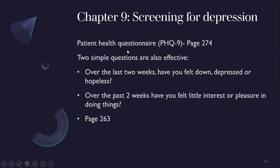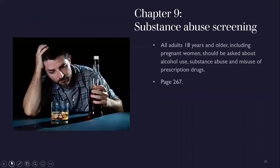Screening for depression: there's the 9-question PHQ-9, but two simple questions are also effective — 'Over the last two weeks, have you felt down, depressed, or hopeless?' or 'Have you had little interest or pleasure in doing things?' A 'yes' to either should prompt further depression screening. All adults 18 and older including pregnant women should be asked about alcohol use, substance use, and misuse of prescription drugs. Asking children is not necessarily recommended unless there are concerns.